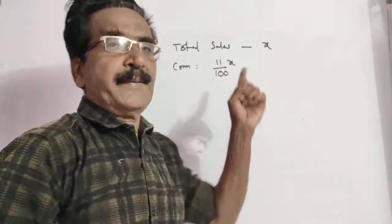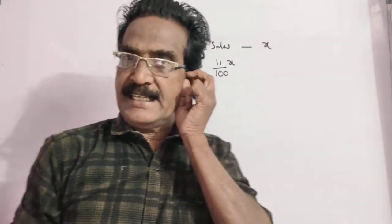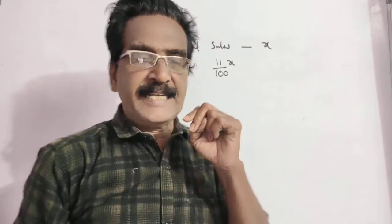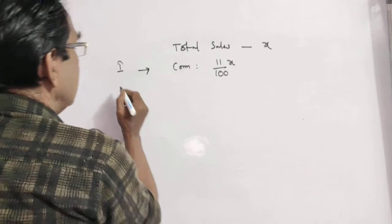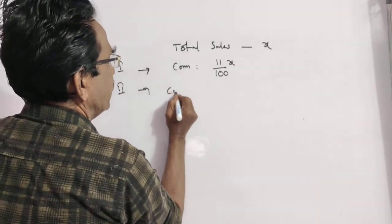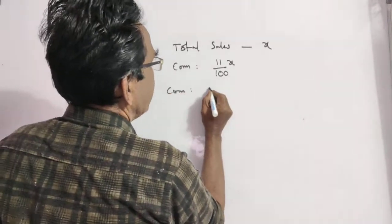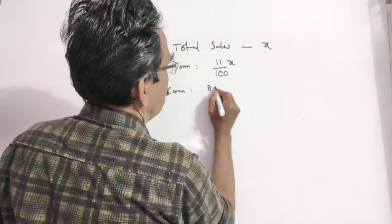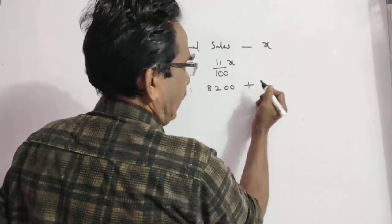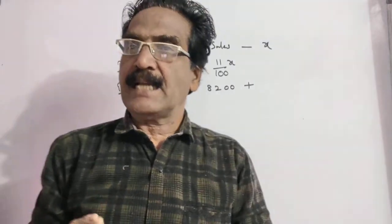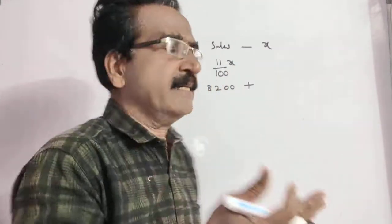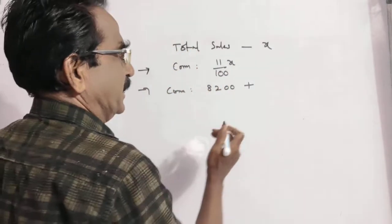This is the commission he receives in the first case. In the second case, the commission is Rs. 8,200 fixed salary plus 5% commission on sales exceeding 20,000.